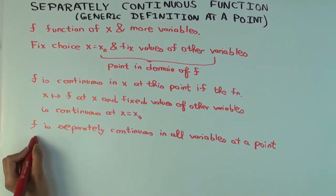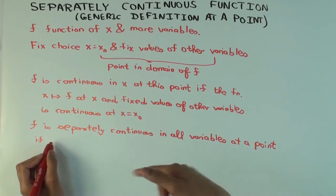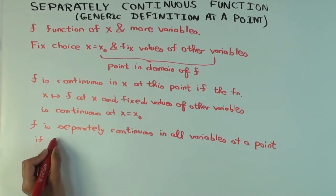That means you pick a point, you pick a variable among all and fix the others is continuous at that point. Continuous in that variable, but that should be true for each variable.